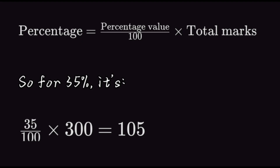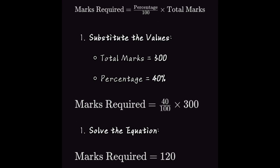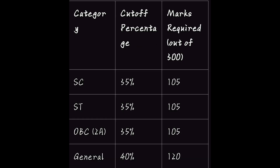For general category candidates, the cut off percentage is 40%. So let's calculate: this means candidates in the general category need to score 120 marks out of 300 to qualify. I am going to provide you a comparison chart here. SC/ST and OBC come under 35%, so they need to obtain 105 out of 300. General category students need to get 40%, so they have to score 120 marks. Even though you are getting these marks, your result is still based on the cut off list.